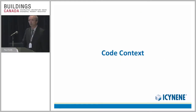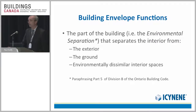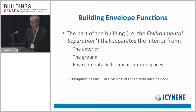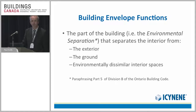I wanted to set the discussion by talking about the code context for everything we're going to cover this morning. Basically, code context for anything building-envelope-related is Part 5 of the building code. Part 5 of the building code defines what's called an environmental separation — it separates the interior from the exterior, from the ground, and from environmentally dissimilar interior spaces.